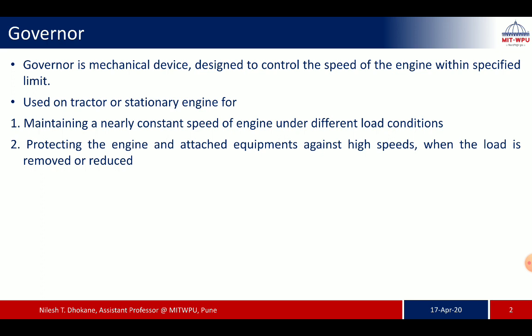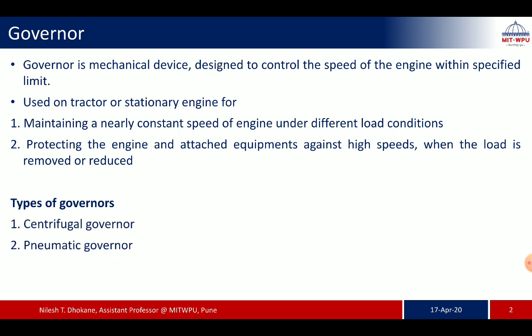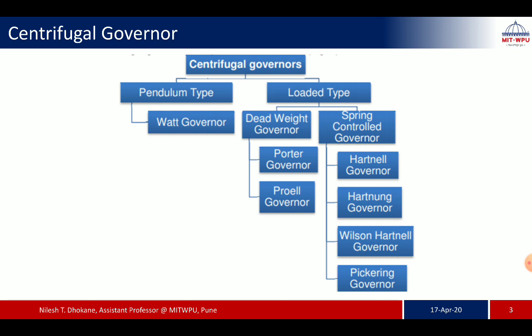The governor protects the engine against high speed when the load is removed or reduced. When load changes, the governor ensures constant speed and should not allow the speed to increase or decrease. There are different types of governors: centrifugal governor, pneumatic governor, and hydraulic governor. Centrifugal governors are mainly used for maintaining the speed of IC engines.